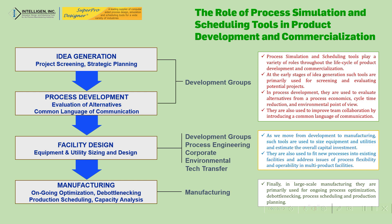A very important thing is that the simulator becomes a common language of communication, because many processes involve different sets of people. For example, in fermentation — such as ethanol production — there are upstream, fermentation, and downstream sections. People working in upstream may not know what is happening downstream, and vice versa. Giving them an overview map of the complete process helps everyone understand better.